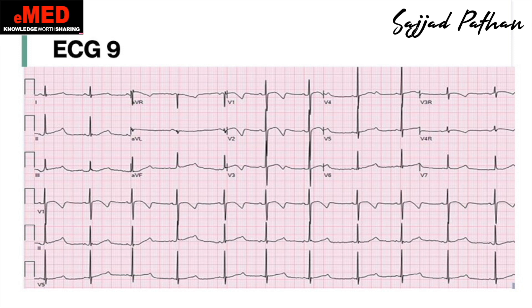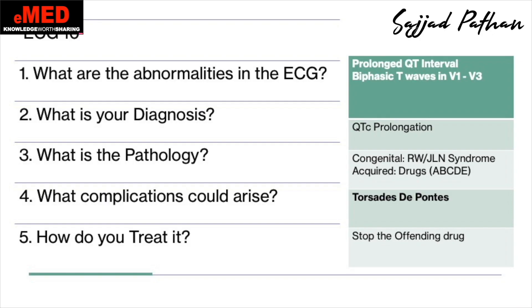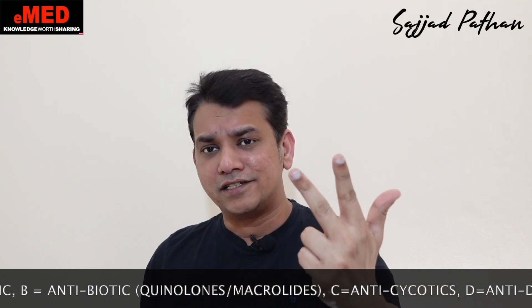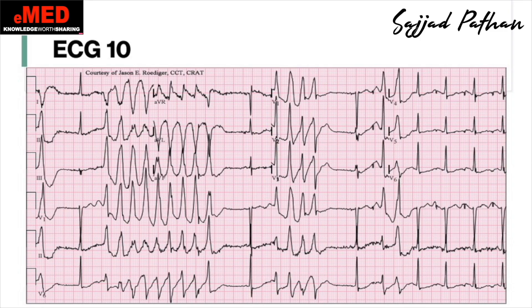The second-to-last ECG: there is a long QT interval evident in all leads, and biphasic T waves seen in V1, V2, V3. The key message is identifying the prolonged QT interval. The diagnosis is QTc prolongation. Pathology could be congenital — Romano-Ward syndrome or Jervell and Lange-Nielsen syndrome — or acquired due to drugs, remembered as A, B, C, D, E: antiarrhythmics, antibiotics (macrolides and quinolones), antipsychotics, antidepressants, and anti-emetics such as metoclopramide. Treatment: stop the offending agent and observe.